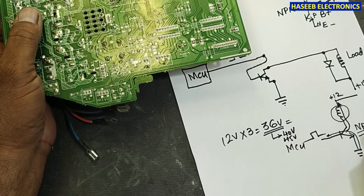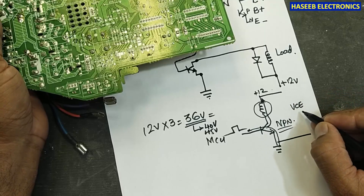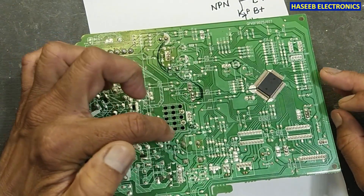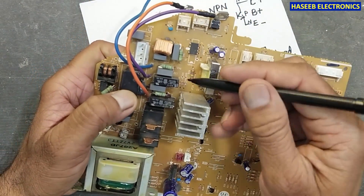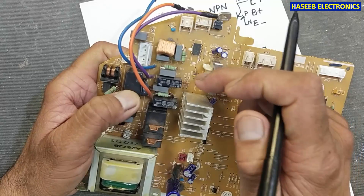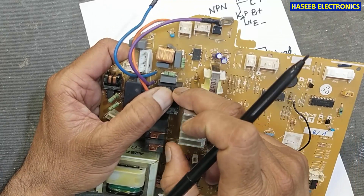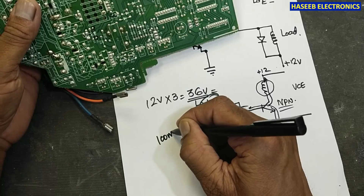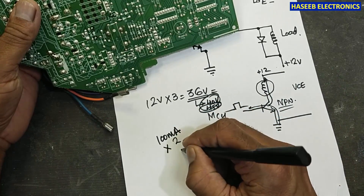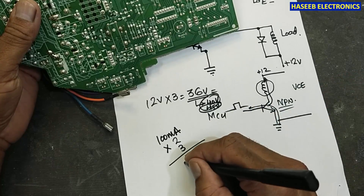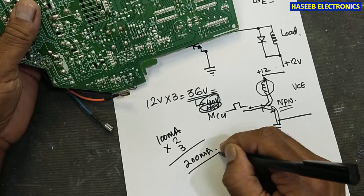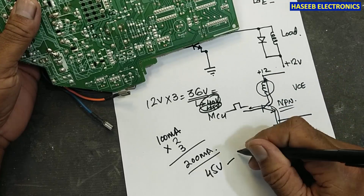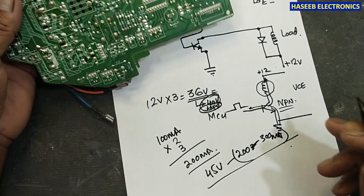The VCE voltage - collector to emitter - should be 45 volts or 40 volts. The load here is a relay. We check the relay's datasheet to find the operating current at 12 volts. For example, it may be 100 milliamperes. We multiply by 2 or 3, giving 200 to 300 milliamperes.